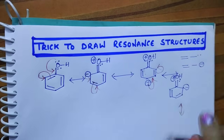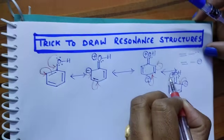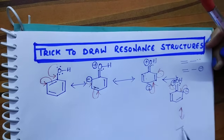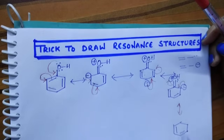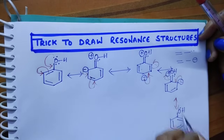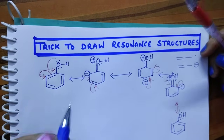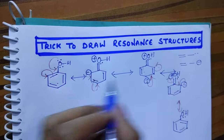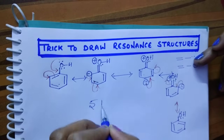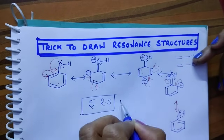Next, this negative charge shifts here, these two electrons shift here. Then we get oxygen with a lone pair — again it gets its lone pair back. So total, how many resonance structures are possible? 1, 2, 3, 4, 5 — five resonating structures are possible for phenol.